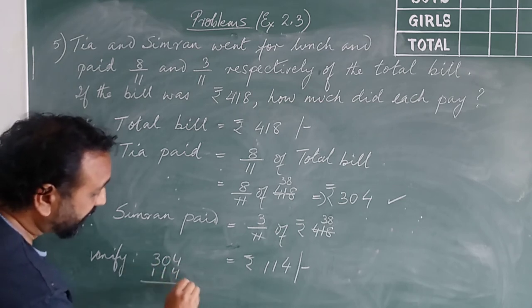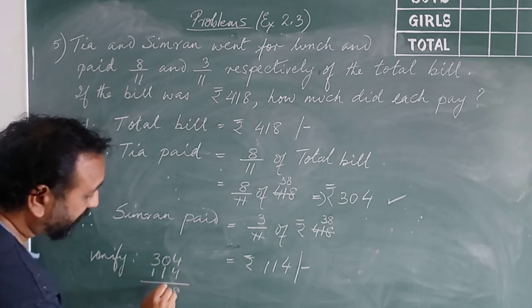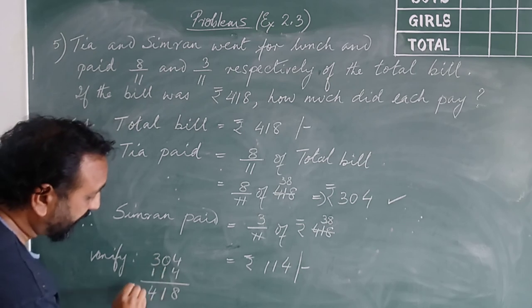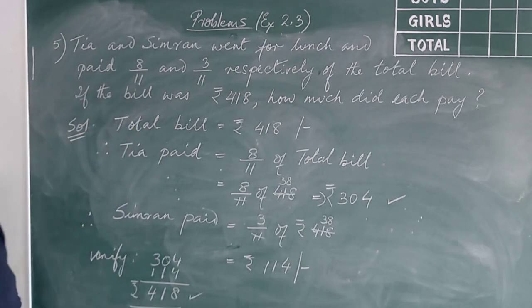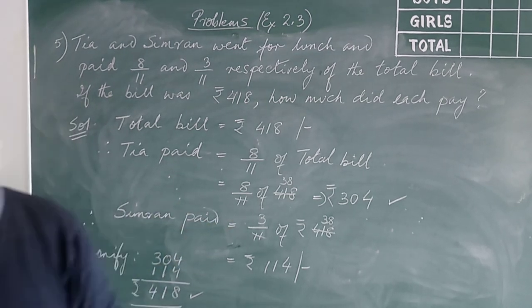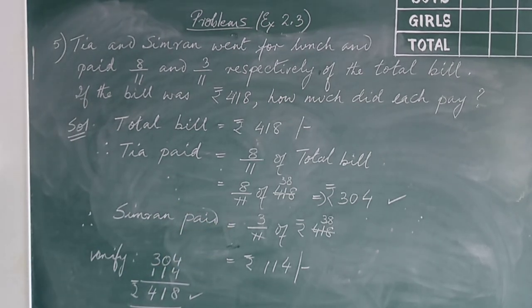And this girl Simran paid this much. 304 plus 114 equals 418. Total amount is clear. So here you are, final answer. Moving on to the last sum.